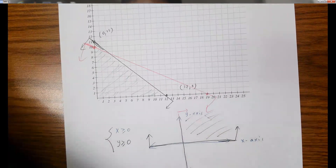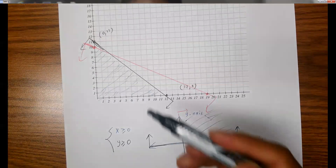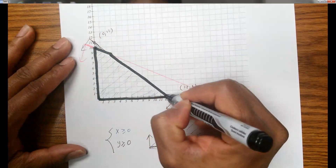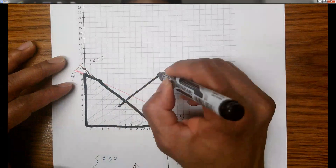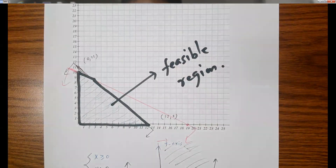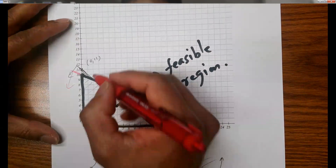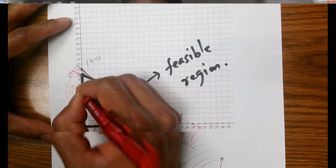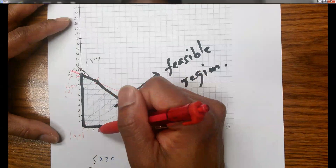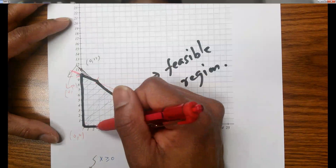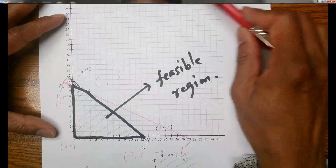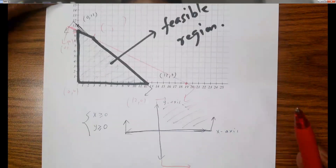From here, if you want to find the feasible region, you trace from corner to corner — that's the feasible region. If you want to go further and find the corner points, these points are: (0, 10), (0, 0), (12, 0), and this point of intersection, which is approximately (2.5, 8.5) or something like that — you need to find it exactly. We can use the substitution method for finding that intersection point.